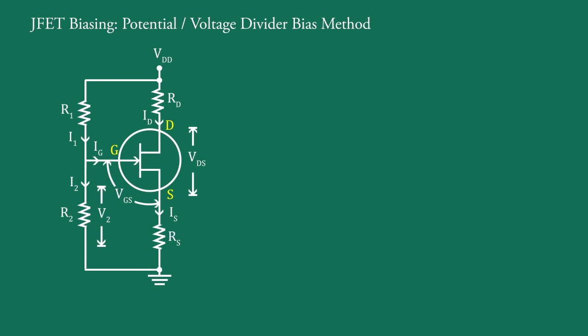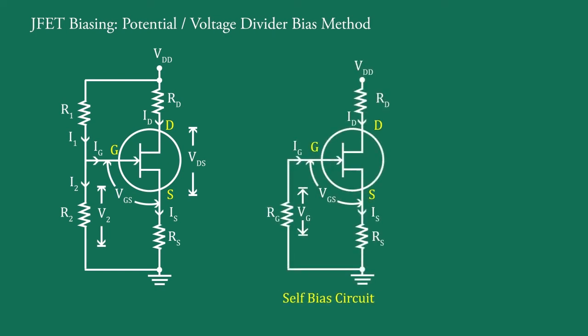It is a slightly modified form of self-bias circuit. Here, one more resistance R1 is inserted compared to the self-bias circuit.